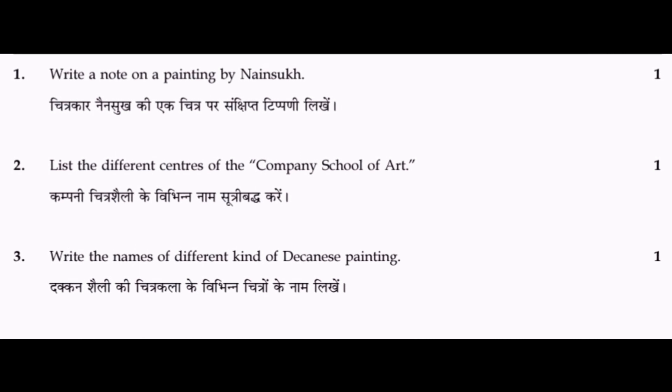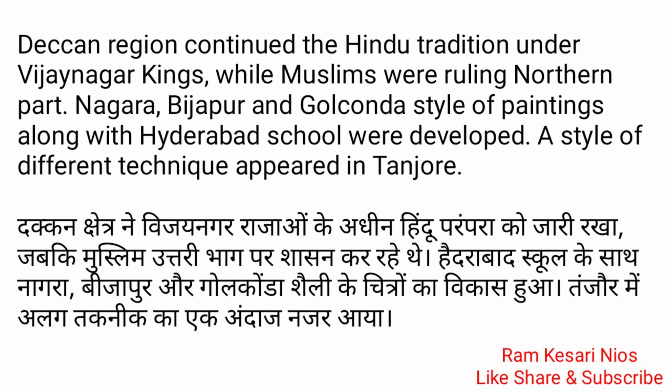Question 3: Write the names of different kinds of Deccani paintings. The Deccan region continued the Hindu tradition under Vijayanagar kings while Muslims were ruling the northern part. Nagpur, Bijapur and Golconda styles of paintings along with the Hyderabad school were developed. A style of different technique appeared in Tanjore.